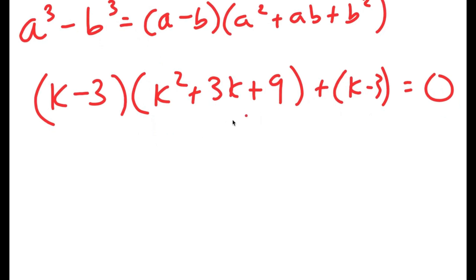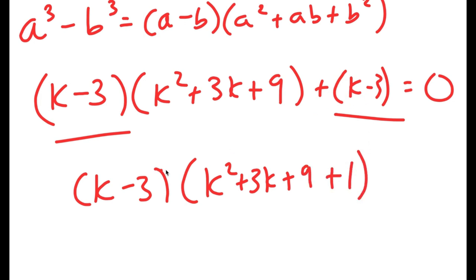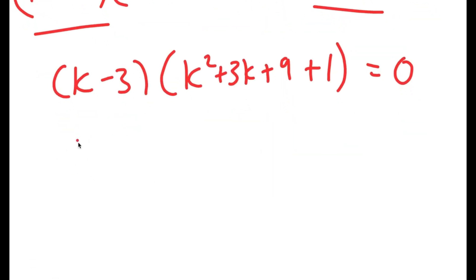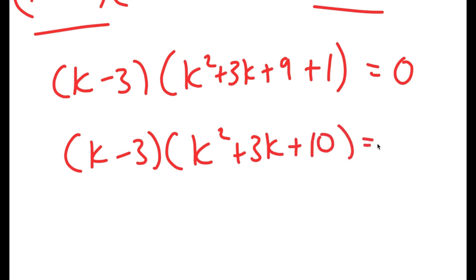Because both of these terms have k minus 3 in them, I can factor out k minus 3. So I get k minus 3 times k squared plus 3k plus 9 plus 1, because k minus 3 divided by k minus 3 is 1, is equal to 0. So this becomes k minus 3 times k squared plus 3k plus 10 is equal to 0.